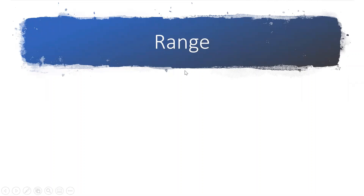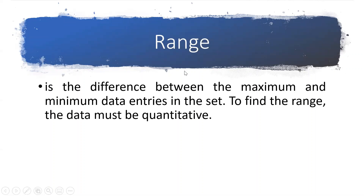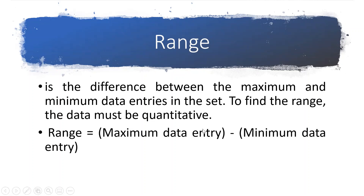One of the most common measures of variation is the range. The range is the difference between the maximum and the minimum data entries in the set. To find the range, the data must be quantitative. The formula for the range is the maximum data entry minus the minimum data entry.